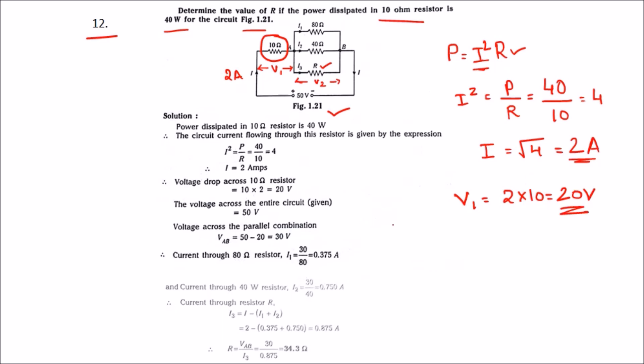The supply voltage is nothing but V is equal to V1 plus V2. We know V1 is 20 and we need to find out V2. Therefore, V2 is equal to 30 volts. If resistances are in parallel then the voltage across each resistance will be equal. Therefore, the voltage across R will be 30. The voltage across 40 ohms will be 30.